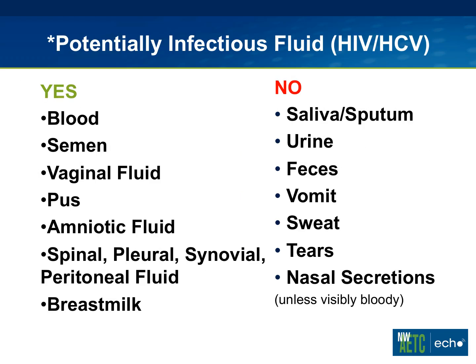What about the term 'potentially infectious fluid'? For HIV and hepatitis C, the fluids we know or worry about as possible vectors for HIV transmission include blood — the obvious one — semen and vaginal fluid, but also pus, amniotic fluid, spinal, pleural, synovial, peritoneal fluid, and breast milk as well.